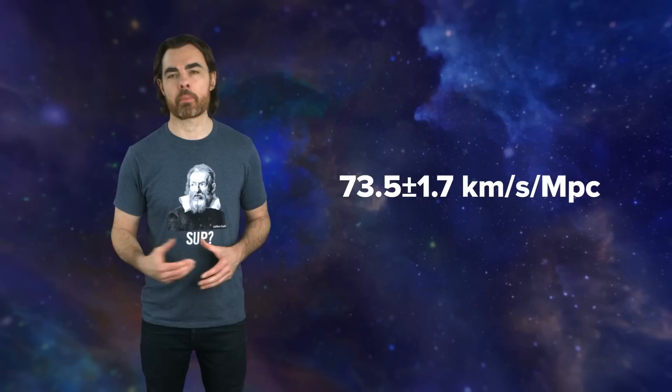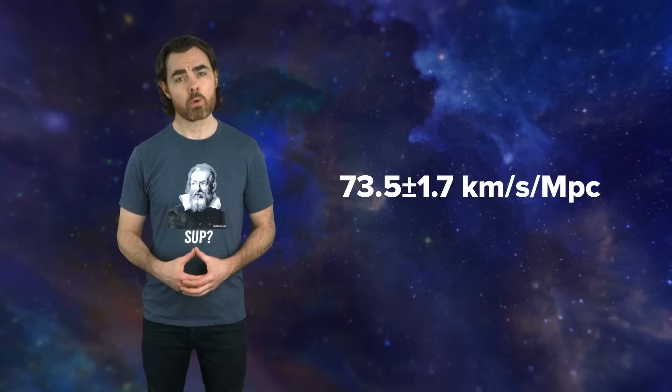Recent teams have now narrowed down the Hubble constant to 73.5 plus or minus 1.7 kilometers per second per megaparsec. That 2%-ish uncertainty is a hell of a lot better than the old factor of 2 uncertainty. So where's the crisis?